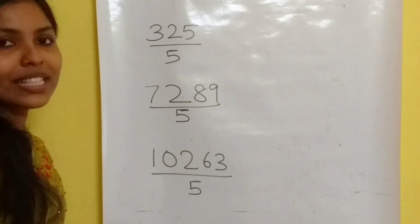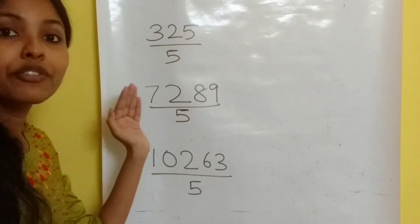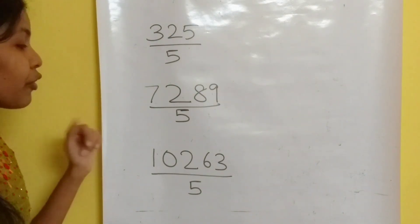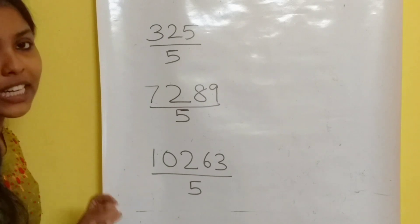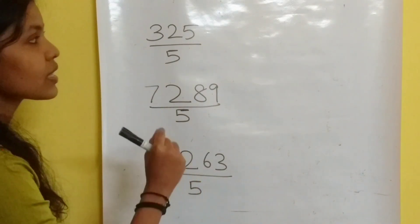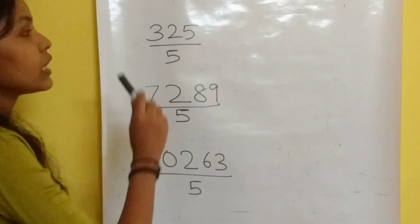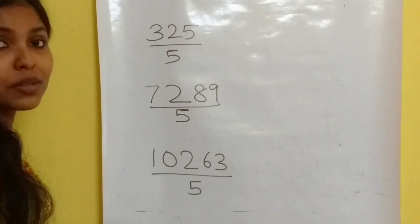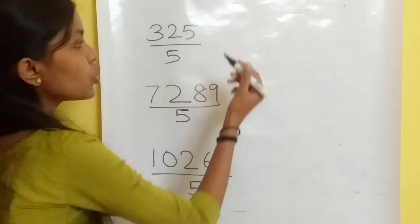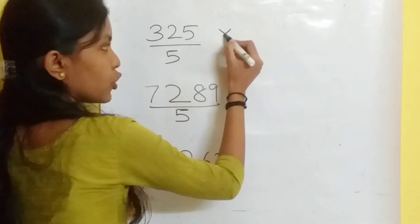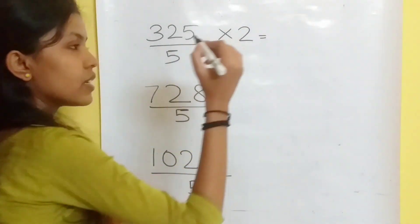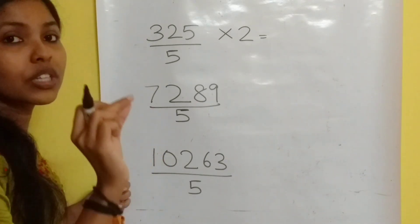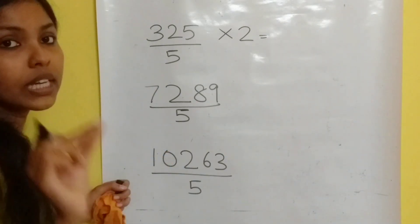Now let's see how to divide a number by 5. I have taken three examples: a three-digit number, a four-digit number, and a five-digit number. You just have to follow two steps. First, multiply the numerator by 2. Second, the answer should contain only one digit after the decimal point.